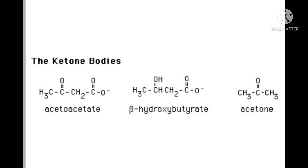Acetoacetate is the primary ketone body and the other products are beta-hydroxybutyrate and acetone. There is a peculiarity: with acetoacetate, beta-hydroxybutyrate, and acetone — there is no keto group in beta-hydroxybutyrate. There is a hydroxy group. The other two, acetoacetate and acetone, have a keto group. But still, these are all called ketone bodies.